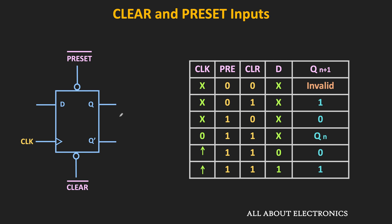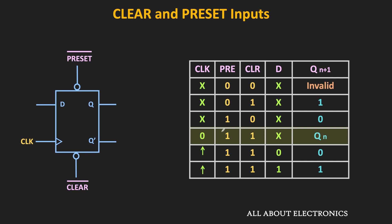Both preset and clear inputs cannot be active at the same time, so the first input condition where both inputs are 0 is the invalid condition. When the preset input is active (preset = 0, clear = 1), the output of the flip-flop will become 1. When the preset is 1 and the clear is 0, the output of the flip-flop will become 0 regardless of the clock signal and the other inputs. Whenever both preset and clear inputs are 1, the output will be governed by the synchronous inputs. If the clock is also low, the output retains its current state; when the clock is present, the output depends on the D input.